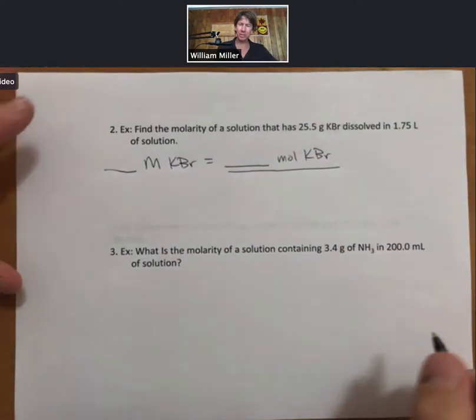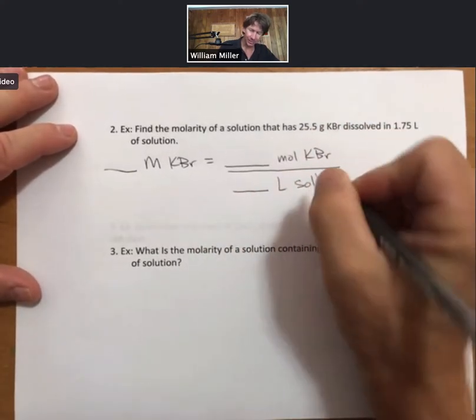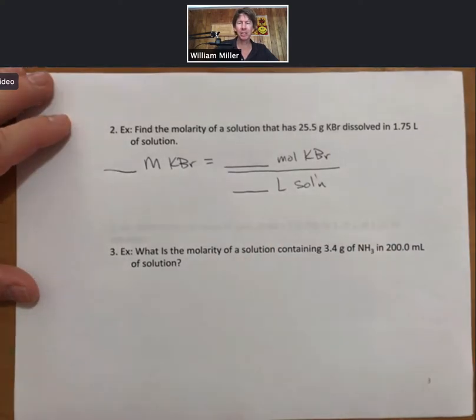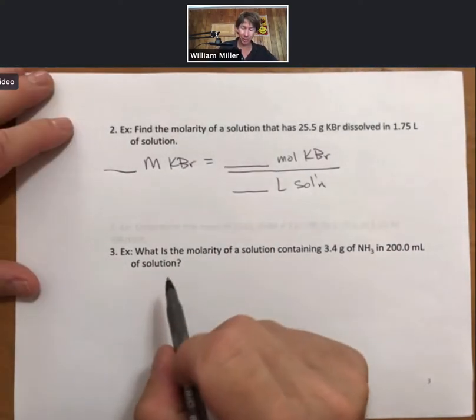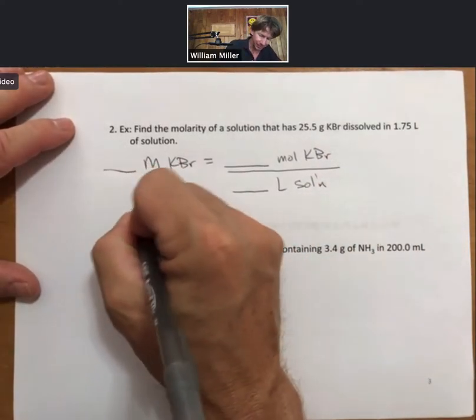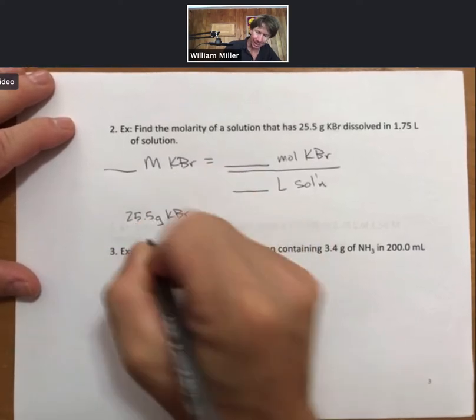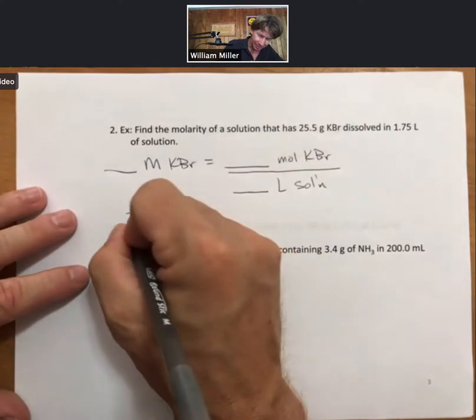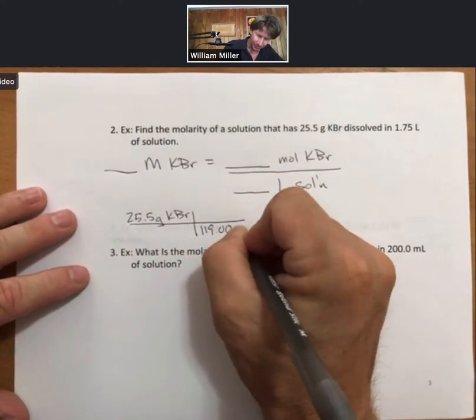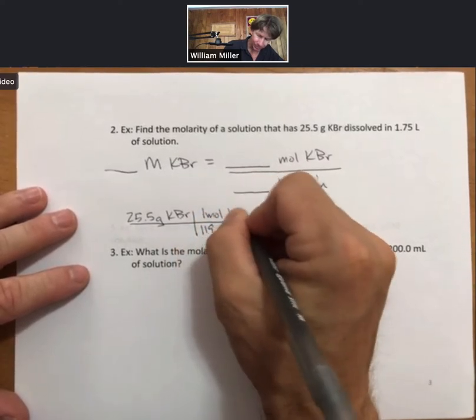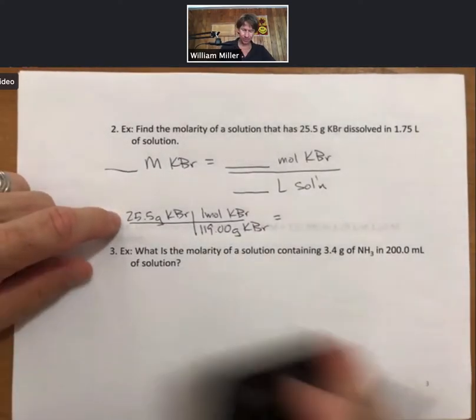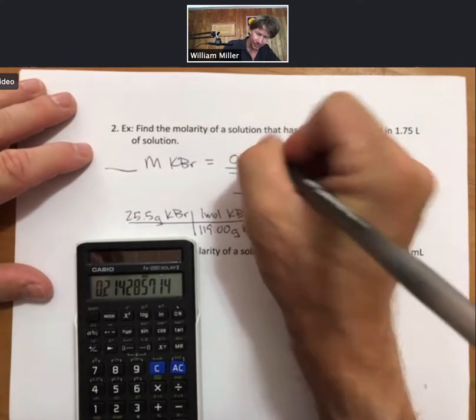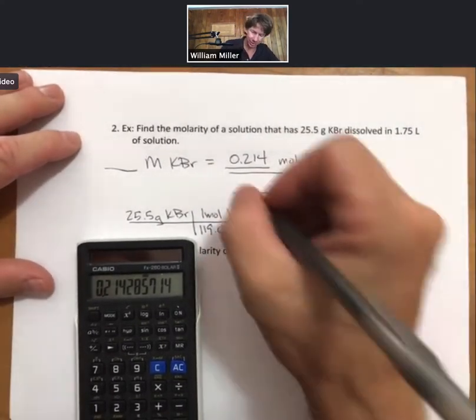One way is to think about the definition of molarity, which means blank molarity, or moles of potassium bromide, equals blank moles of potassium bromide per blank liters. And this is the definition of molarity. We have the grams of potassium bromide, and not the moles, but we do know how to convert molarity into moles. The molar mass of potassium bromide, 119.00. We can do this math. We get 0.214 moles of potassium bromide. We have the liters, 1.75.